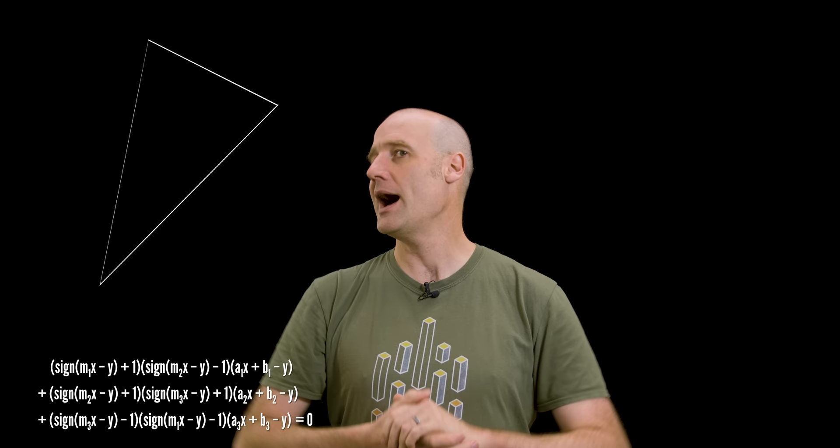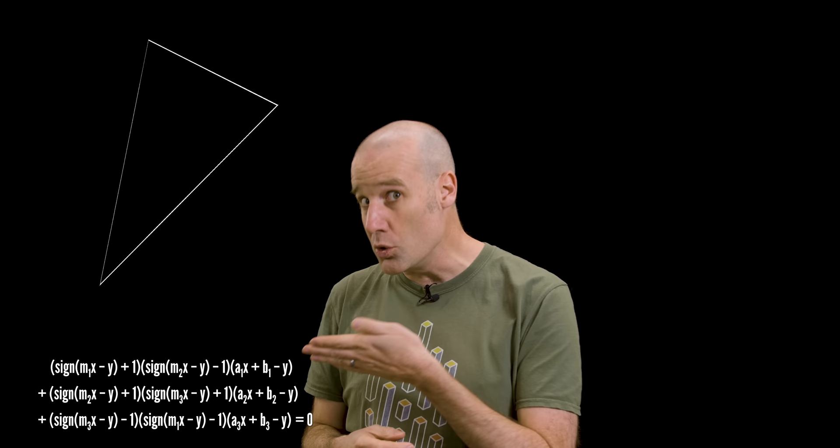Some time ago I made a video about how there's no equation for a triangle, depending on your definitions of both equation and triangle. By the end of the video I had this triangle, which is plotted using that equation, although the existence of the sign function, which says if a value is positive or negative, upsets some people. We also have this triangle, which is made using that equation.